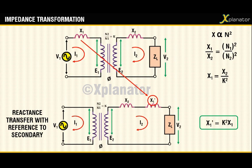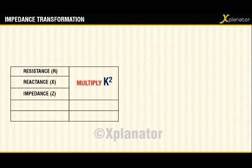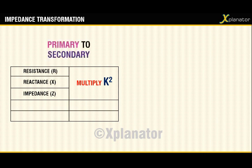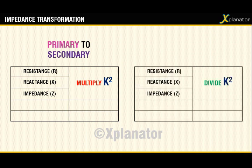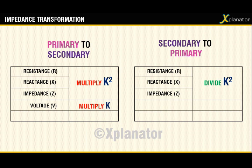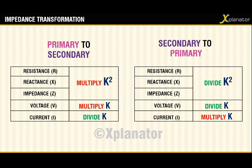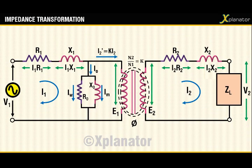From the above relations: you multiply resistance, reactance, and impedance by k² if transferring them from primary to secondary circuit. Similarly, you divide resistance, reactance, and impedance by k² if transferring them from secondary to primary circuit. However, the voltage gets multiplied by k if going from primary to secondary, and gets divided by k if transferred from secondary to primary. The current is divided by k if transferred from primary to secondary, and is multiplied by k if going from secondary to primary.